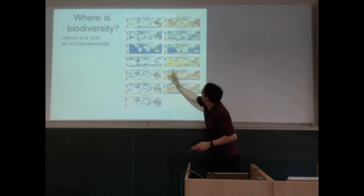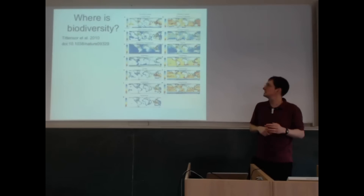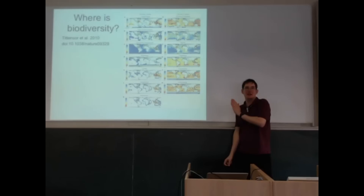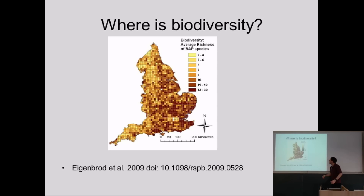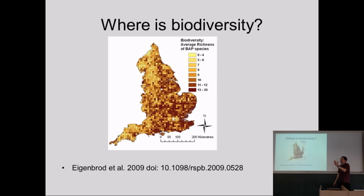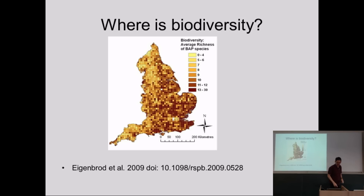The takeaway is: tropics, lots of biodiversity. And actually if you look at Britain, biodiversity action plan species — the things the government is actively trying to conserve — are also in the South and the East, which is of course where the people are. We think the reason is that the amount of energy in the system is why you have more biodiversity in the tropics. Warmer areas have more energy, and that leads to more species. Why exactly? We don't actually know yet. But broadly speaking, energy, tropics, and in general southern areas have more richness.